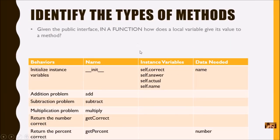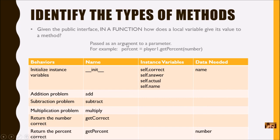Given this public interface, in the function, how does a local variable give its value to a method? The method needs a value from the function — it gets passed as an argument to a parameter. So a number from the function gets passed in to the method's parameter.